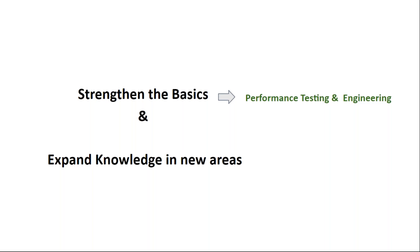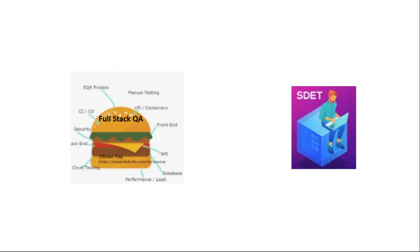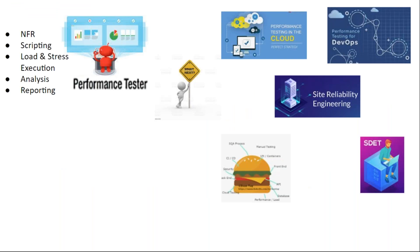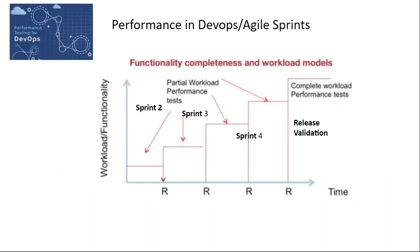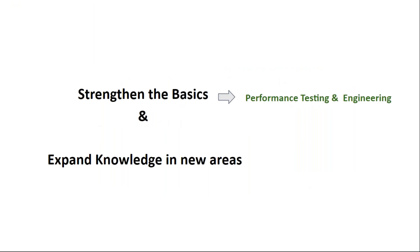Along with strengthening your basics, slowly and steadily expand your knowledge in automation testing, security testing, cloud, DevOps — these additional skill sets will differentiate you from others in the job market and in your projects. You can spend 70 to 80 percent of your time strengthening your basics and about 20 percent expanding your knowledge in other areas. If you follow that ratio, over the next two, three, or four years you will have very strong basics along with a varied skill set as well.